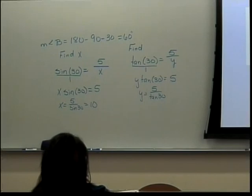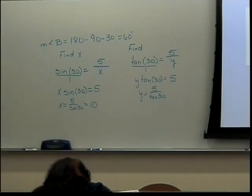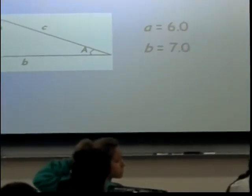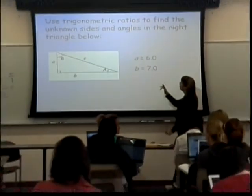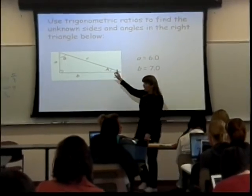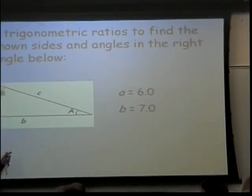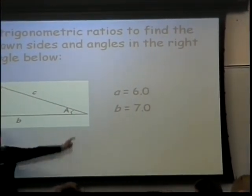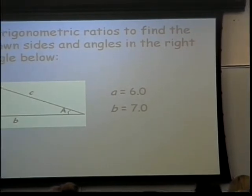We're going to skip to this next problem because it's different. Here, we know what the side lengths A and B are, but we don't know what the angles — the angle measures of A, B, and the big angle A — are.